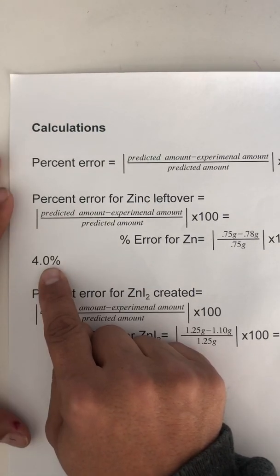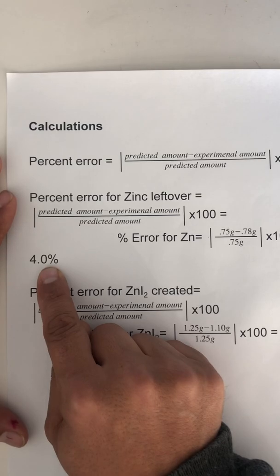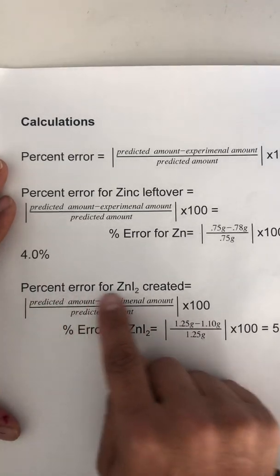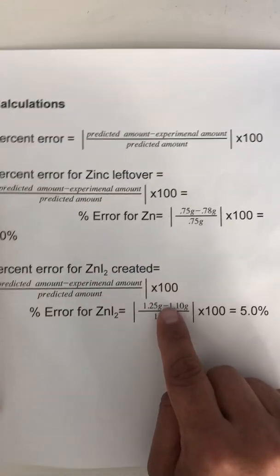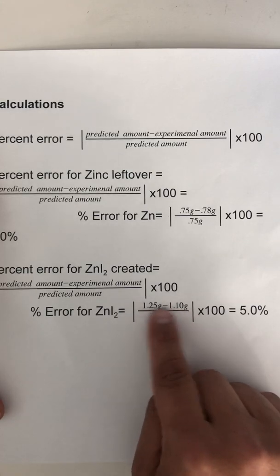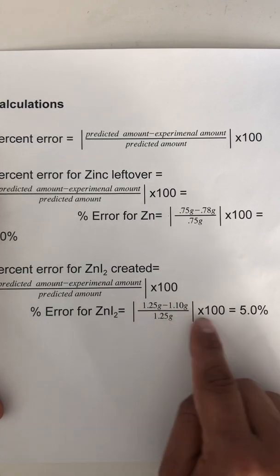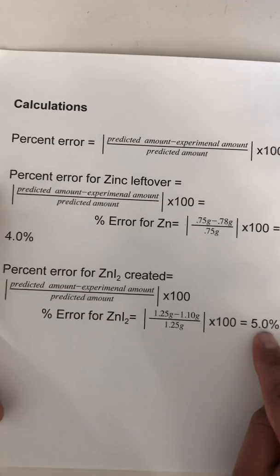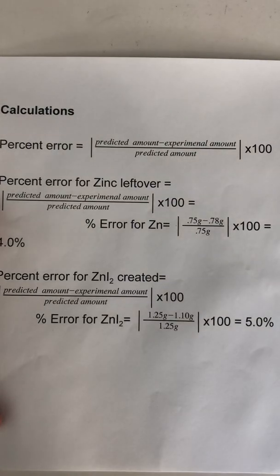And now for the zinc iodide, I predicted 1.25 and I got 1.10. I lost some. Say I spilled a little bit. So I subtract those two divided by 1.25 times 100, and that's a 12% error. Not bad for fake numbers. Hope this helps.